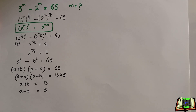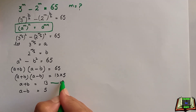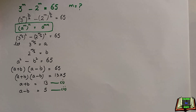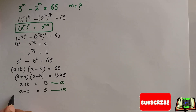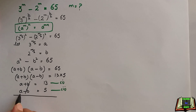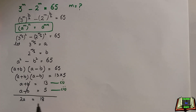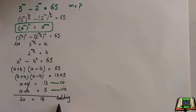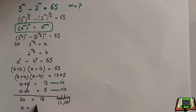Let's name these as equation 1 and equation 2. To eliminate one variable and find the other, we add the two equations. The b terms cancel out, leaving 2a equals 13 plus 5, which is 18. So a equals 18 divided by 2, which is 9.